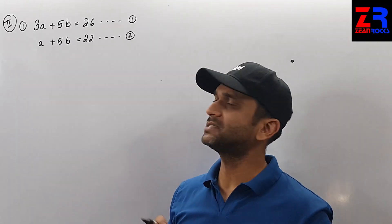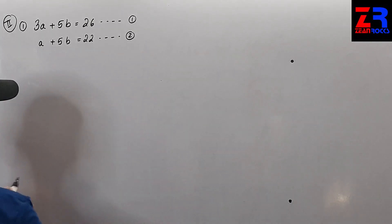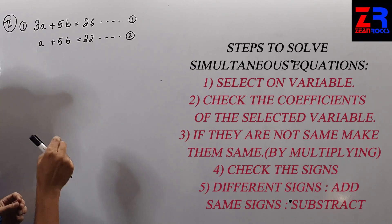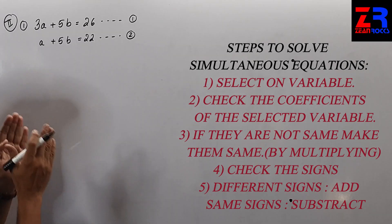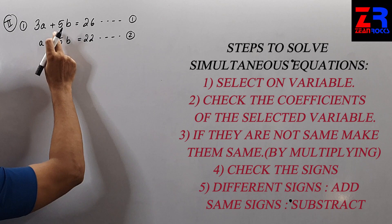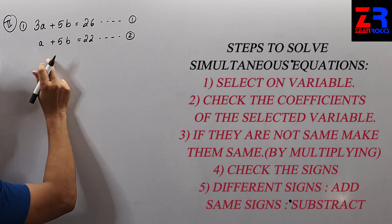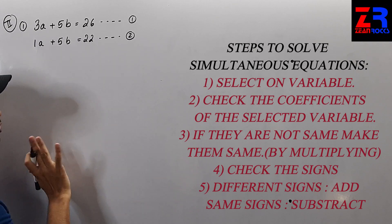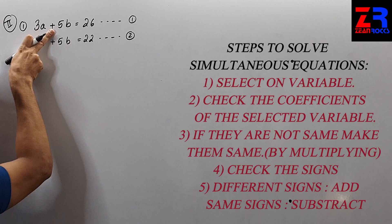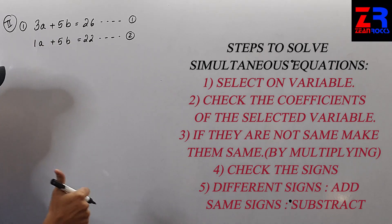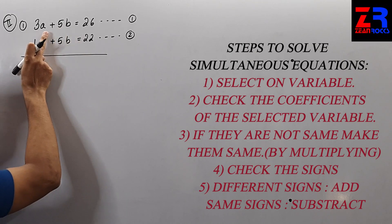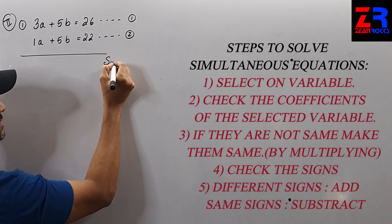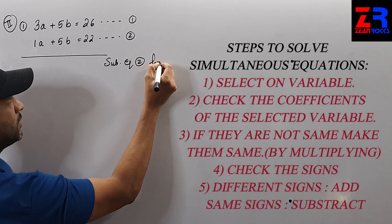We are asked to solve the simultaneous equations. To solve a simultaneous equation, you need to select a variable — either a or b. To select a variable, check that the coefficients are the same. If I select a, the coefficients are 3 and 1 — not the same. But if I select b, the coefficients are both 5. So I can select b. Check the signs — the signs are the same, so you have to subtract. I will write: subtracting equation 2 from equation 1.